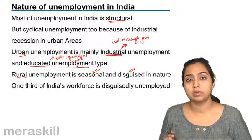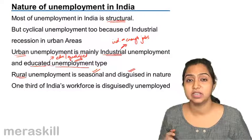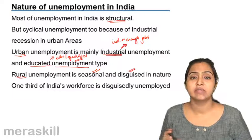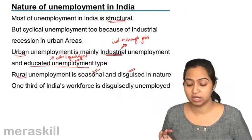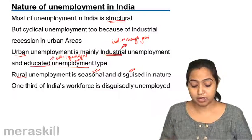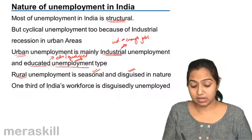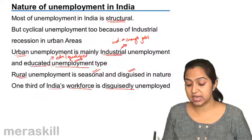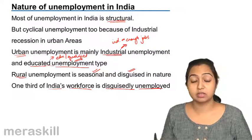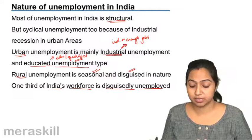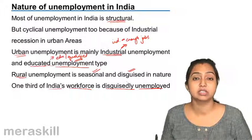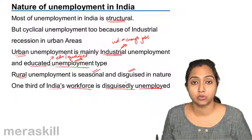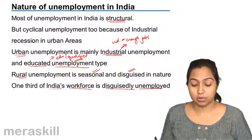Rural unemployment is basically seasonal and disguised in nature, whereas urban unemployment is educated and industrial in nature. One third of India's workforce is disguisedly unemployed — they seem to be employed but are not actually contributing to production.